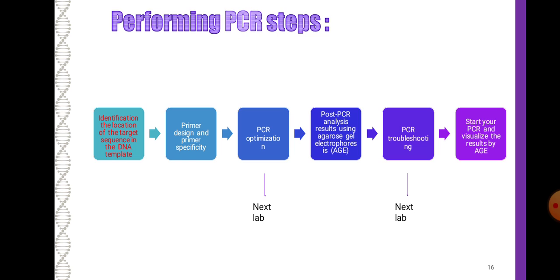The steps for performing PCR are: first, identification of the location of the target sequence in the DNA template; second, primer design and primer specificity; third, PCR optimization; fourth, post-PCR analysis of results using agarose gel electrophoresis; fifth, PCR troubleshooting; and finally, start your PCR and visualize the result by agarose gel.